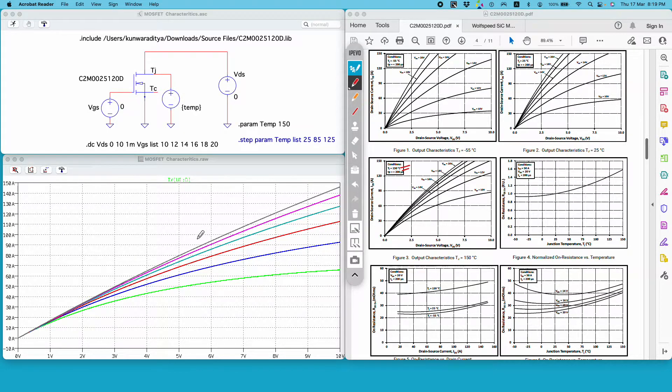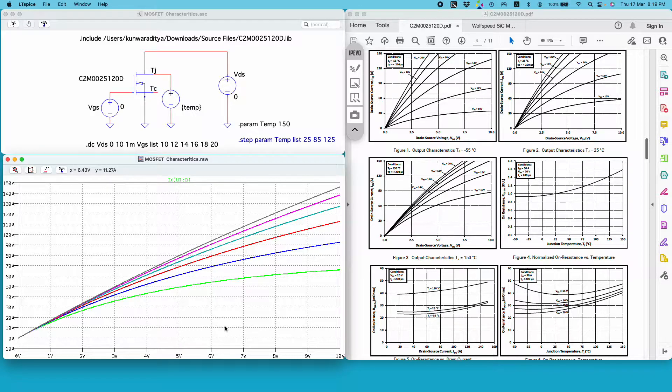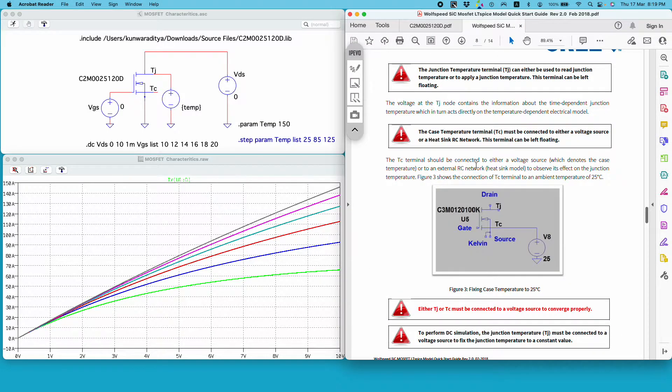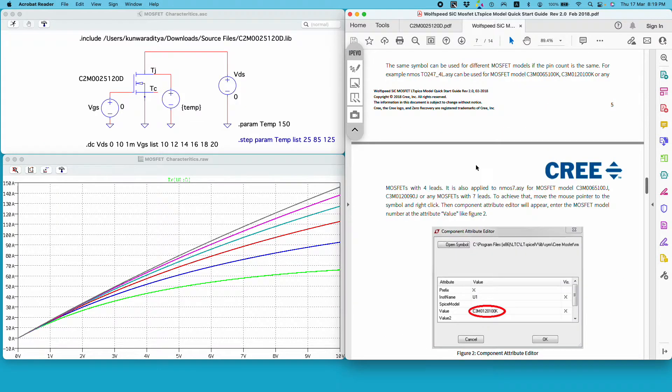If I run the simulation, this is the plot I get. Now this is not a point-by-point match with the datasheet because the instruction manual clearly says that the model is only accurate for certain parameters.